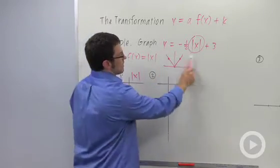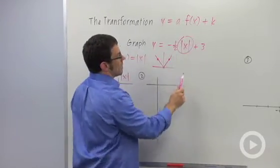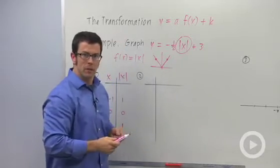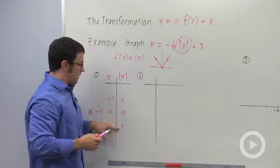Now when you look at this function, the function is basically saying multiply the absolute value of x by negative one-half and then add 3. Now this means two things. First of all, all the transformations are going to happen on this side of the column.